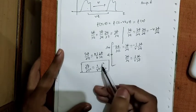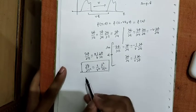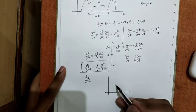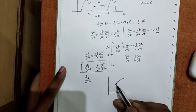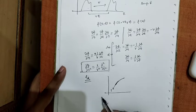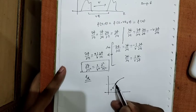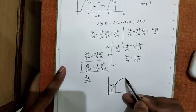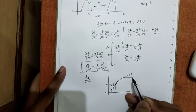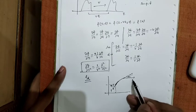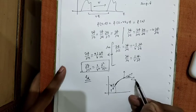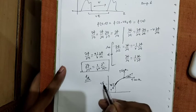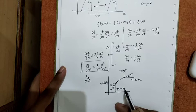Now, to understand what 1/v represents, let's take the example of a wire. When we zoom in on a small segment, it experiences tension T at angle θ₁ on one side and tension T at angle θ₂ on the other side. Resolving these, we get the components T·cos θ₂, T·sin θ₂, T·cos θ₁, and T·sin θ₁.